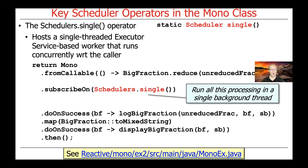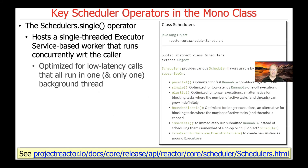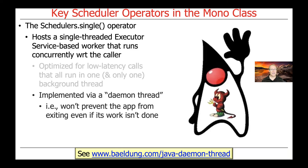The thread returned from the single method is optimized for low-latency calls that all run in one and only one background thread. Another interesting thing to note is that this thread is implemented as a so-called daemon thread. What that means is that if all the other non-daemon threads in the program exit, then daemon threads also automatically exit. So daemon threads don't prevent an app from shutting down when all other non-daemon threads have gone away — even if there's work taking place in that daemon thread, it will just be shut down.